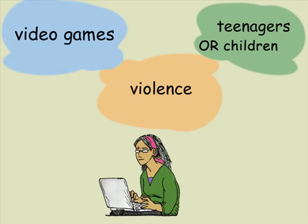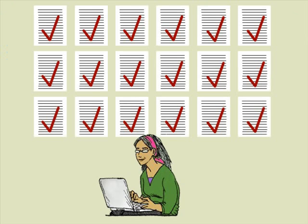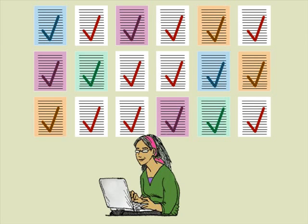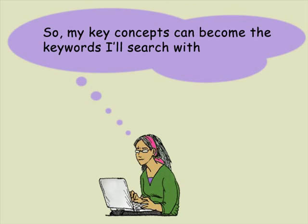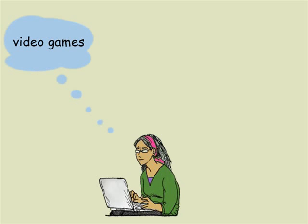The next step is to think of synonyms and related terms for your key concepts. In the thousands of relevant articles that may be out there, they may not all discuss the topic using the same vocabulary. By creating a list of synonyms or related terms, you are also creating a list of keywords you can use to find the relevant articles in a database. In some cases, there may not be any synonymous terms if a concept is only expressed by one commonly used term. That would be the case with video games in this example — video games is really the only commonly used English term.